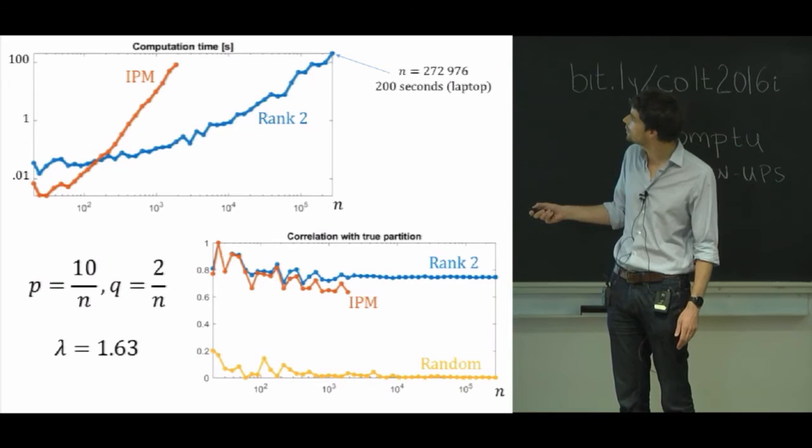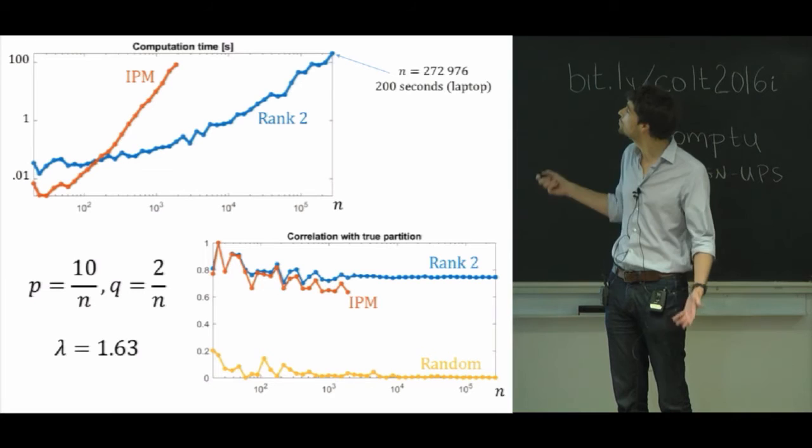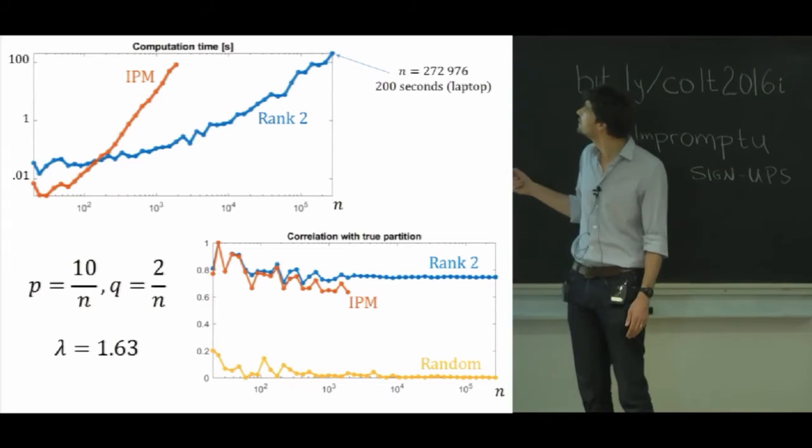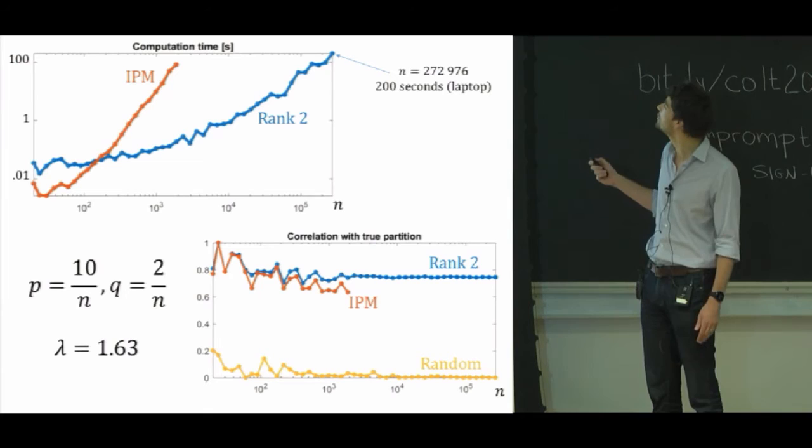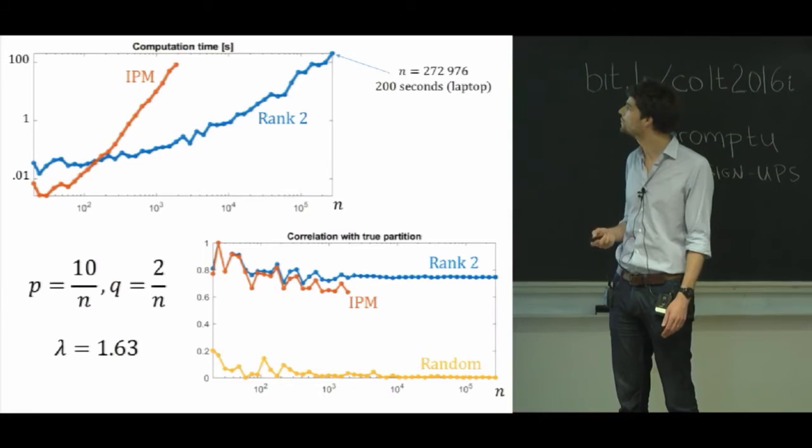But the big difference between the two is that here we look at the same, this is the same experiment except on the y-axis we have computation time and we see that the blue curve is nicer. We get faster computations. This is essentially doing the job of solving the SDP but with 272,000 nodes which is a pretty big SDP to be solving on the laptop.